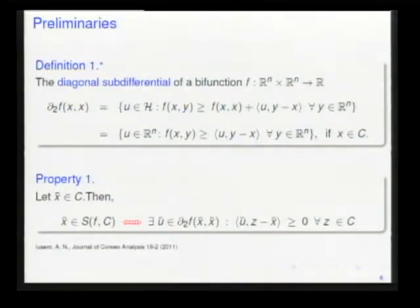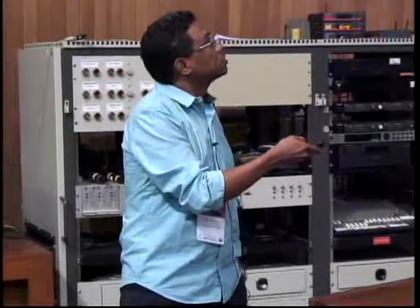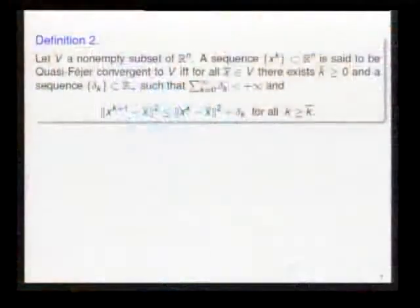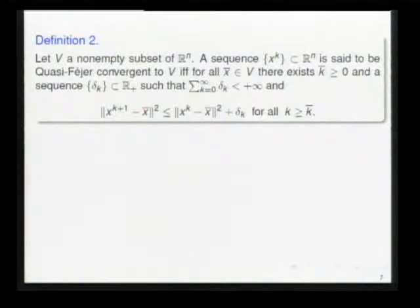We have the first property: an equivalence between the existence of solution and a special variational inequality problem. Here the diagonal sub-differential of f in x bar. For more details, we can find this reference. The maximal monotonicity of the sub-differential will be useful in the convergence analysis.